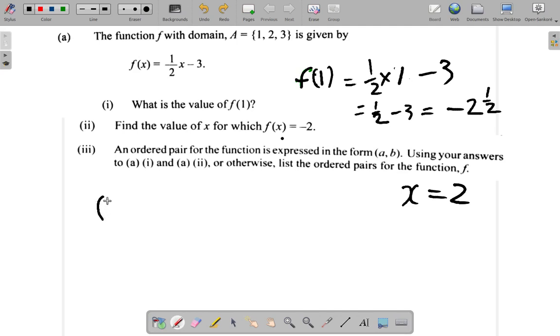So you're going to have 1 comma something in a bracket. So when you have 1 put into the function, you got out negative 2 and a half.